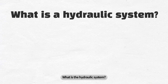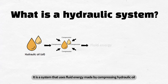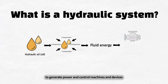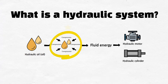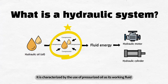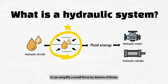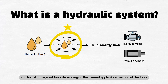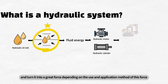What is the hydraulic system? It is a system that uses fluid energy made by compressing hydraulic oil to generate power and control machines and devices, such as a hydraulic cylinder and hydraulic motor. It is characterized by the use of pressurized oil as its working fluid. It can amplify a small force by dozens of times and turn it into a great force depending on the use and application method of this force.